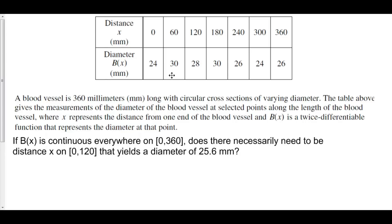So how can we say this using the Intermediate Value Theorem? In order to use the Intermediate Value Theorem, we first must state that our function b of x is continuous on the two values that we'll be using as our endpoints. Since b of x is continuous everywhere from 0 to 360, that means that b of x is continuous from 0 to 60. So, looking from 0 to 60, b of x is continuous, and therefore we can invoke the Intermediate Value Theorem.